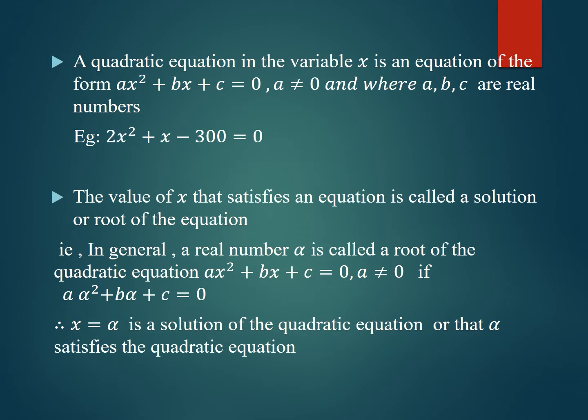We equate this polynomial to 0 to get a quadratic equation. Generally a quadratic polynomial is of the form ax² + bx + c where a is not equal to 0. So a quadratic equation in the variable x is an equation of the form ax² + bx + c = 0, where a ≠ 0 and a, b, c are real numbers.